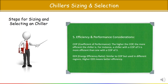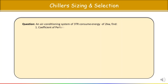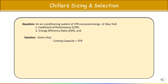To calculate COP and EER, consider this example: an air conditioning system of 3 TR consumes 2 kW of energy. Cooling capacity is 3 TR. Convert to BTU per hour: 1 TR = 12,000 BTU/hr, so 3 TR = 36,000 BTU/hr. Power input is 2 kW. Convert to BTU/hr: 1 kW = 3.412 BTU/hr, so multiply accordingly.